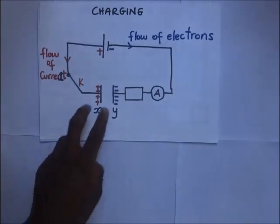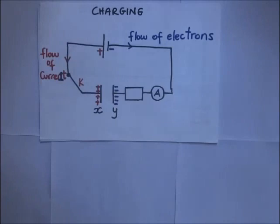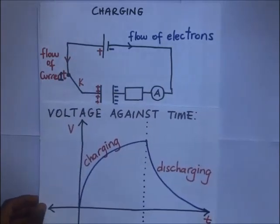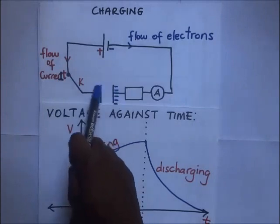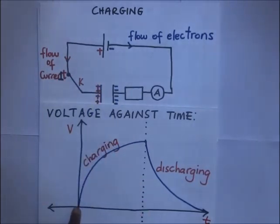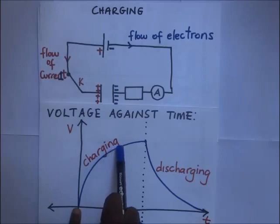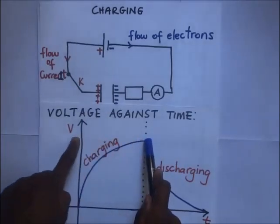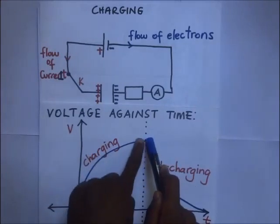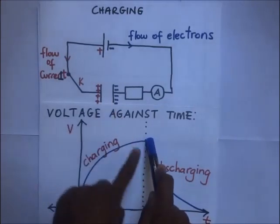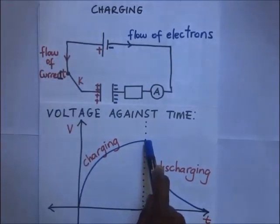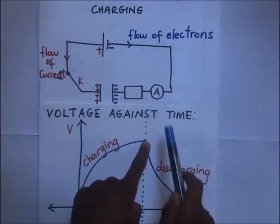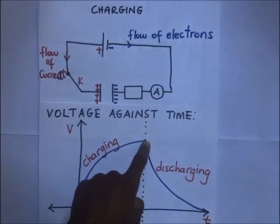Let's look at how the potential difference across the capacitor plates varies with time during charging. At first the PD across the plates is zero. As charging continues, the PD increases until it reaches the maximum voltage and charging stops. The capacitor is fully charged when the PD equals the EMF of the cell, and at that point current stops flowing — the ammeter is no longer deflecting.